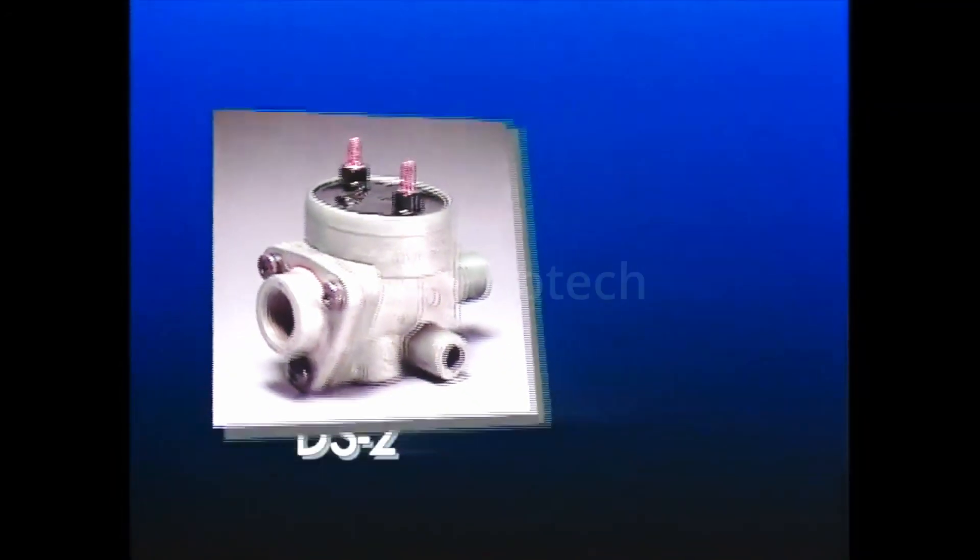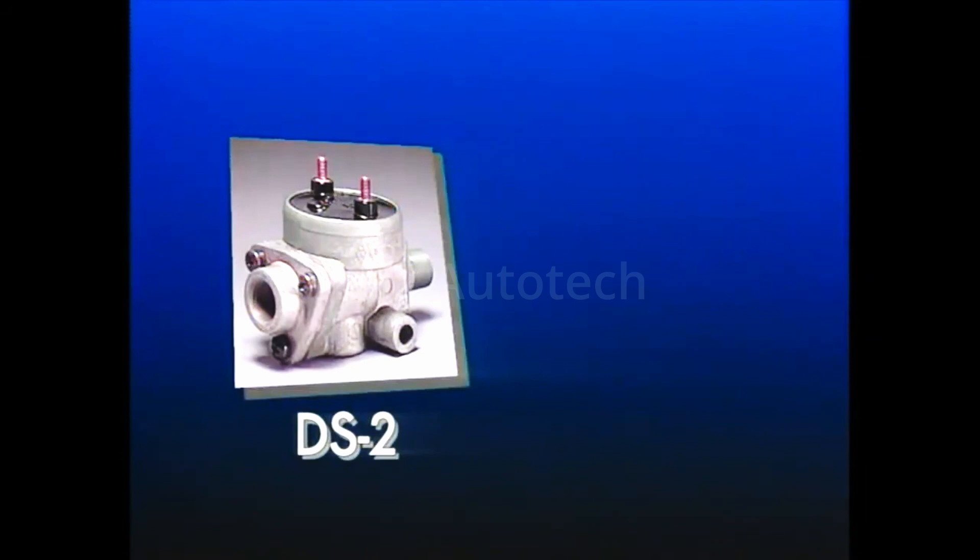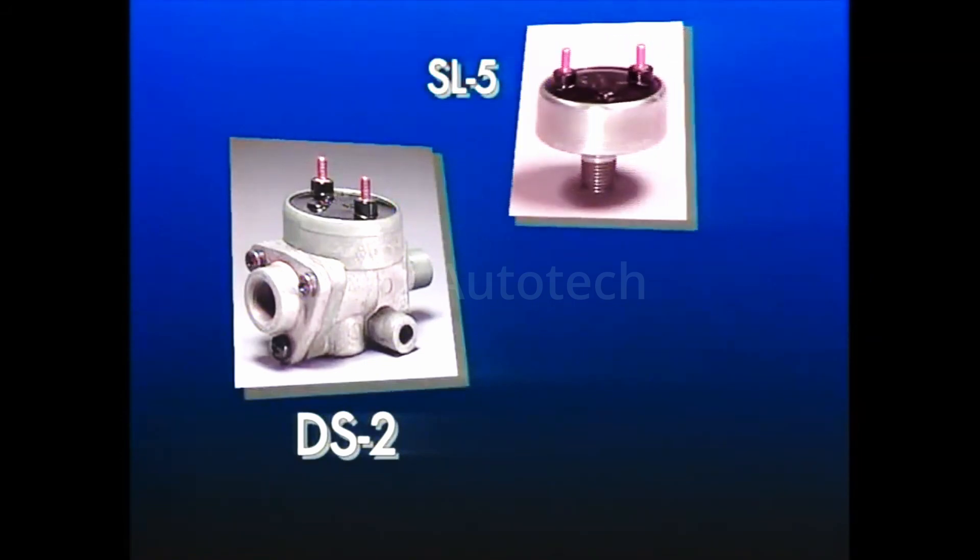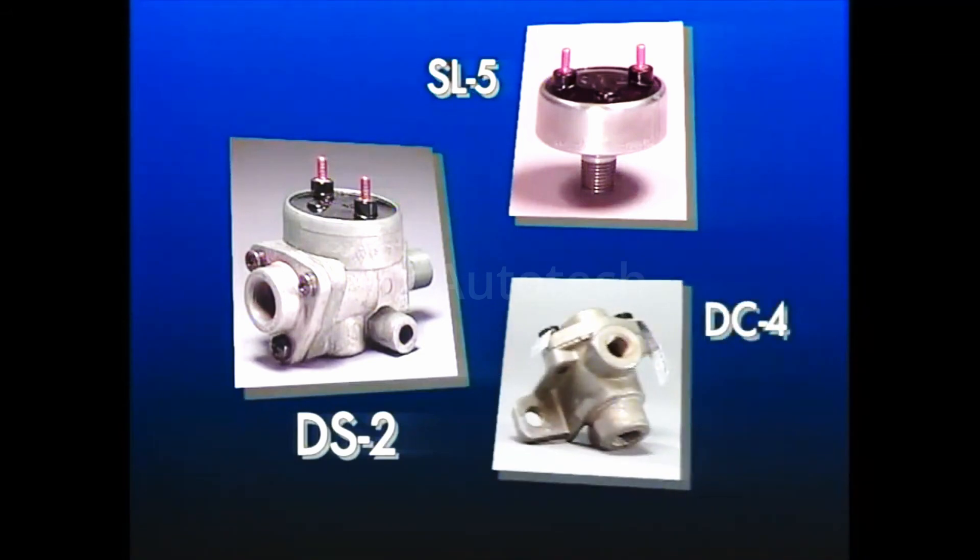That's the function of the DS-II. It's a combination of two valves, the SL-5 stoplight switch from part two and the double-check valve from part three.